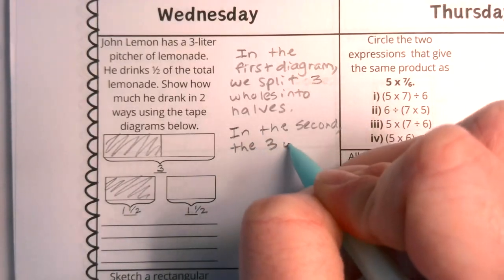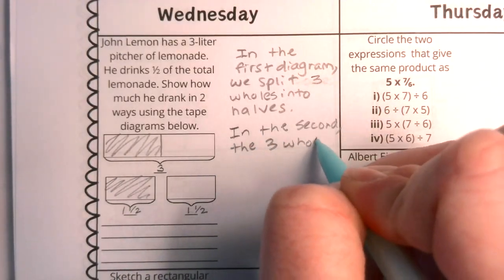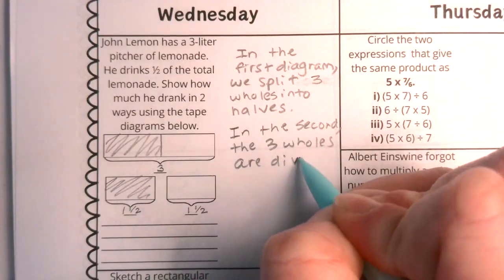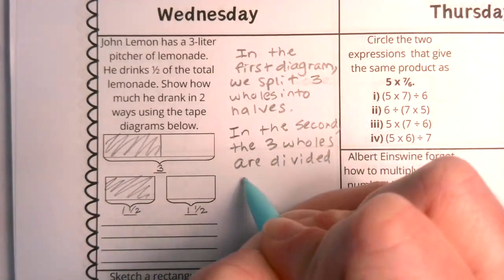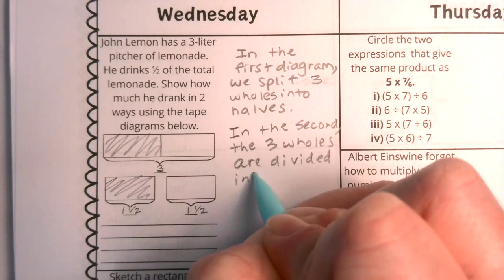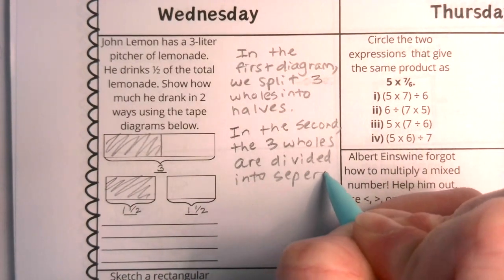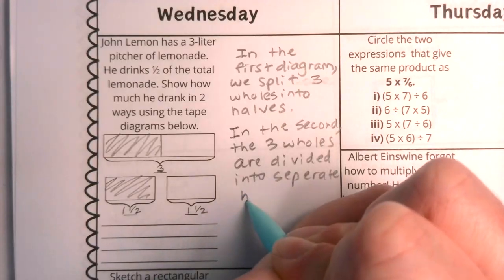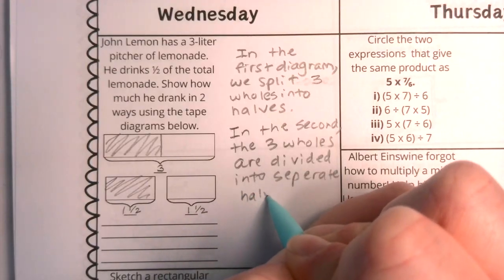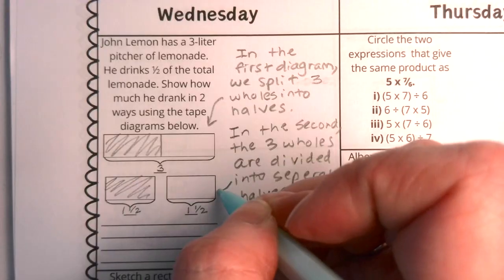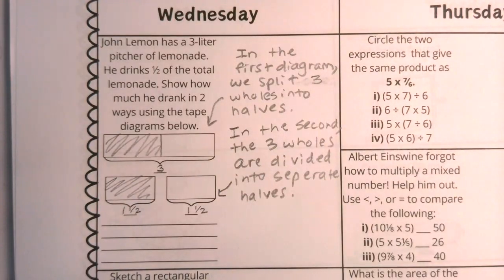Now in the second diagram, the three wholes are divided into separate parts. And this has really just said in words exactly what we did as we answered this problem.